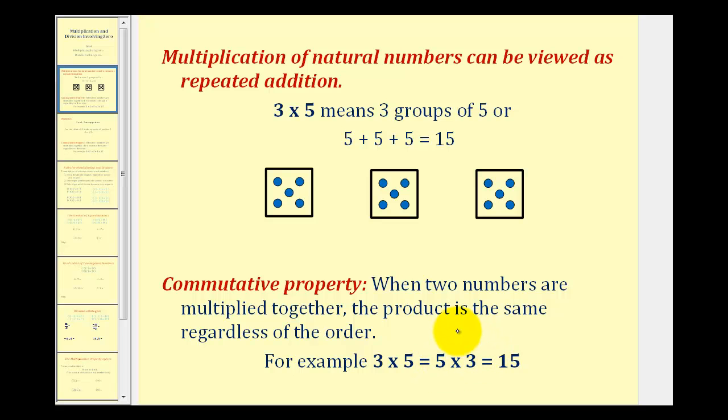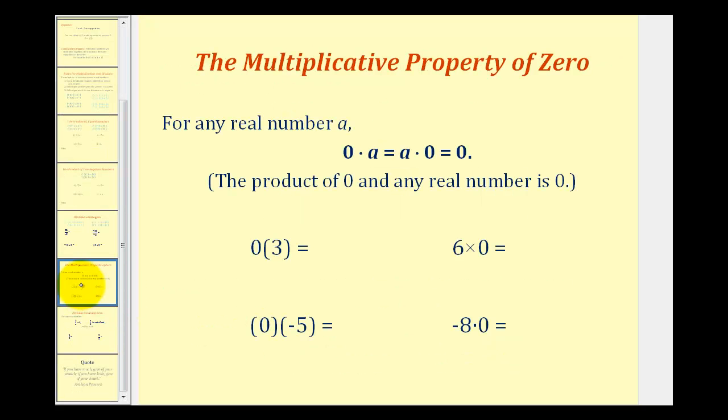So now let's talk about multiplication involving zero. For any real number a, zero times a equals a times zero, which always equals zero. So the product of zero and any real number is always zero.